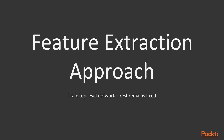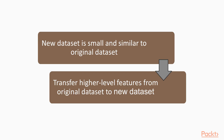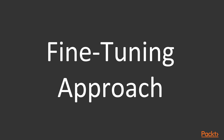In this approach, we train only the top level of the network — the rest of the network remains fixed. When the new dataset is relatively small and similar to the original dataset, the higher-level features learned from the original dataset should transfer well to the new dataset.